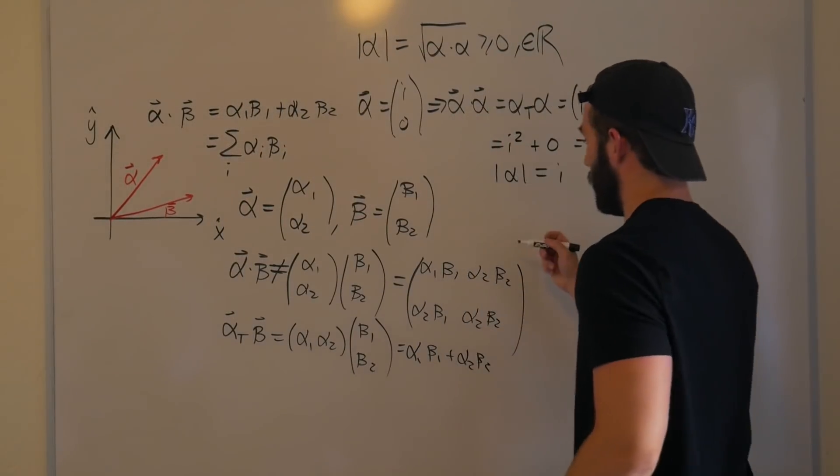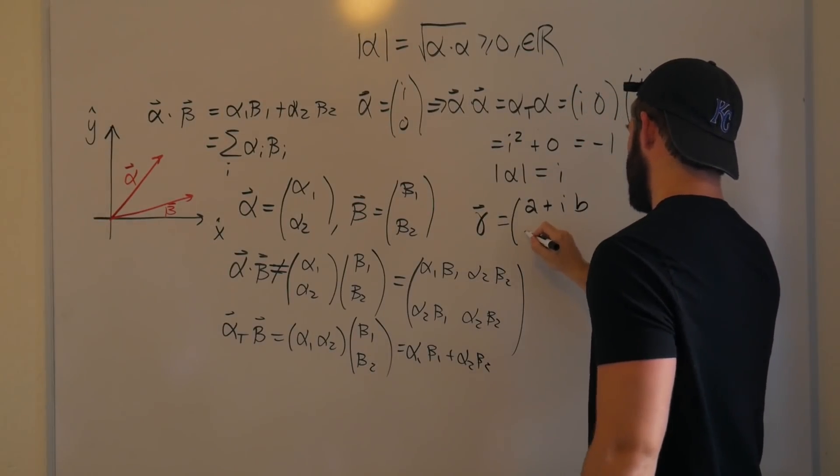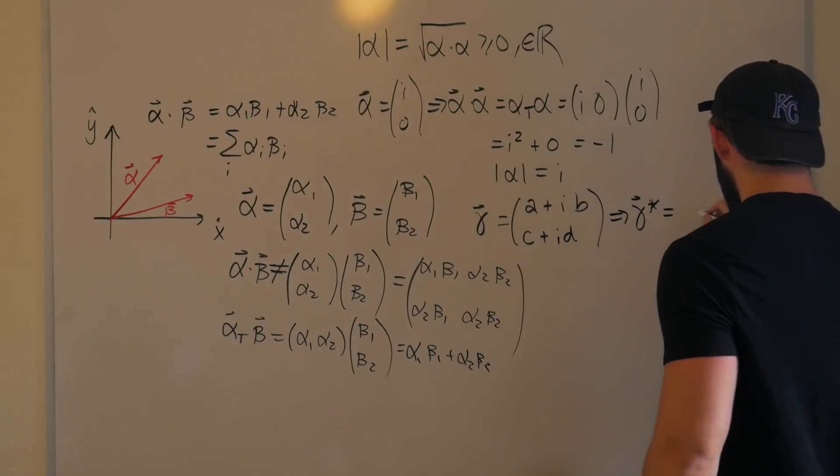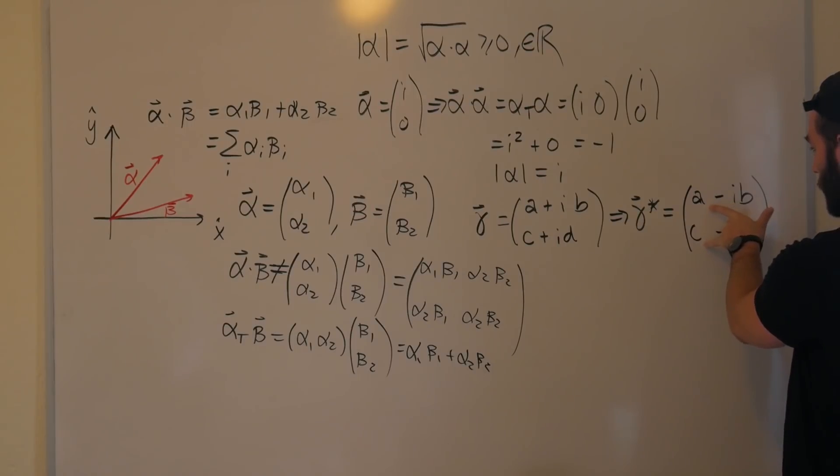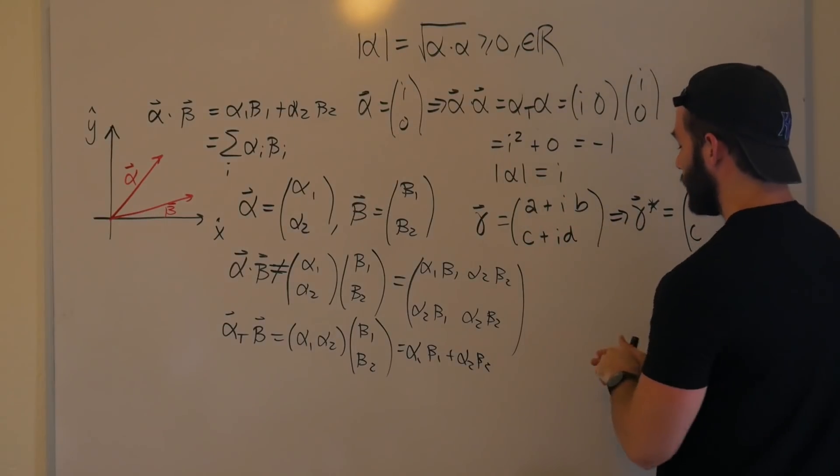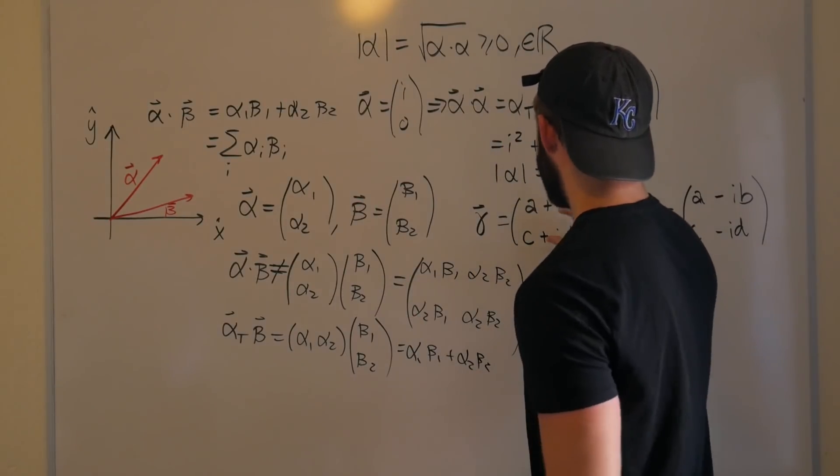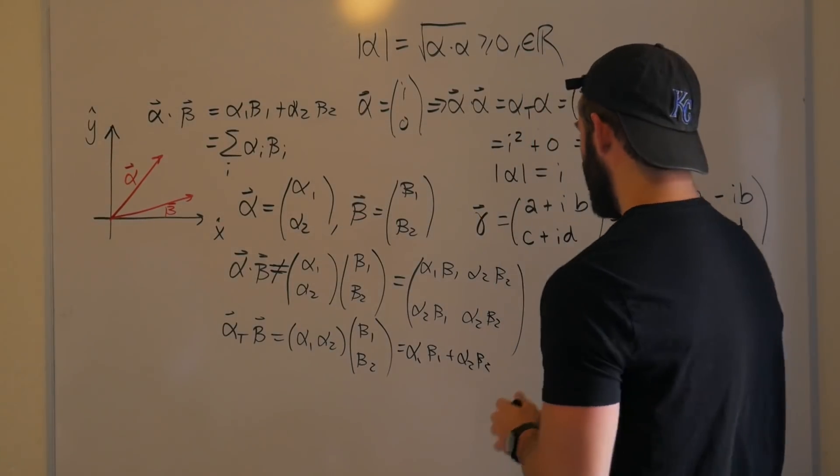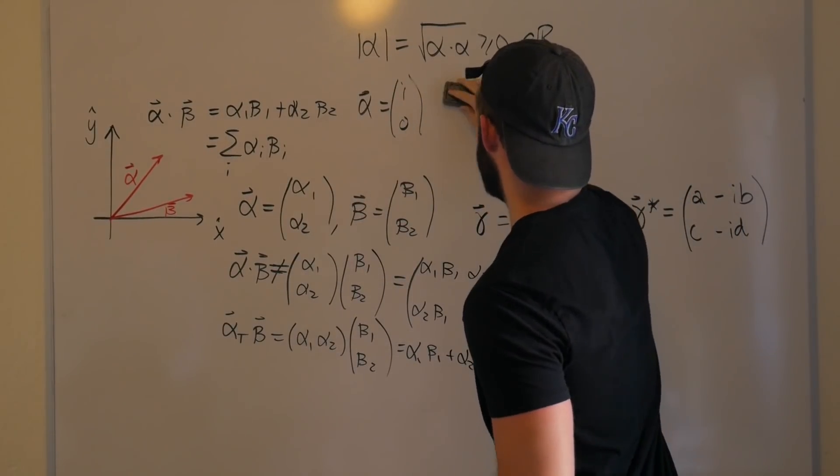And the complex conjugate can be defined the following way. Say that we have some new vector that we call gamma that is equal to a+ib and then c+id. The complex conjugate defined with this little asterisk is equal to a-ib, c-id. And you'll notice that the sign change only affects the complex part of this vector. So in the limit that there is no complex part, that gamma is purely real, the complex conjugate is just equal to itself. So in the limit that this vector is real, we should be able to get back our original definition of the dot product.